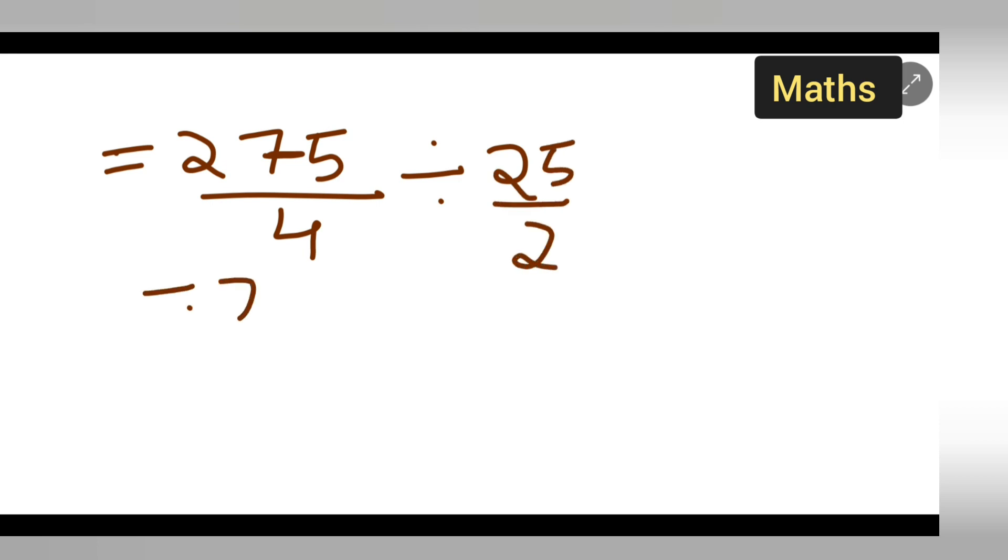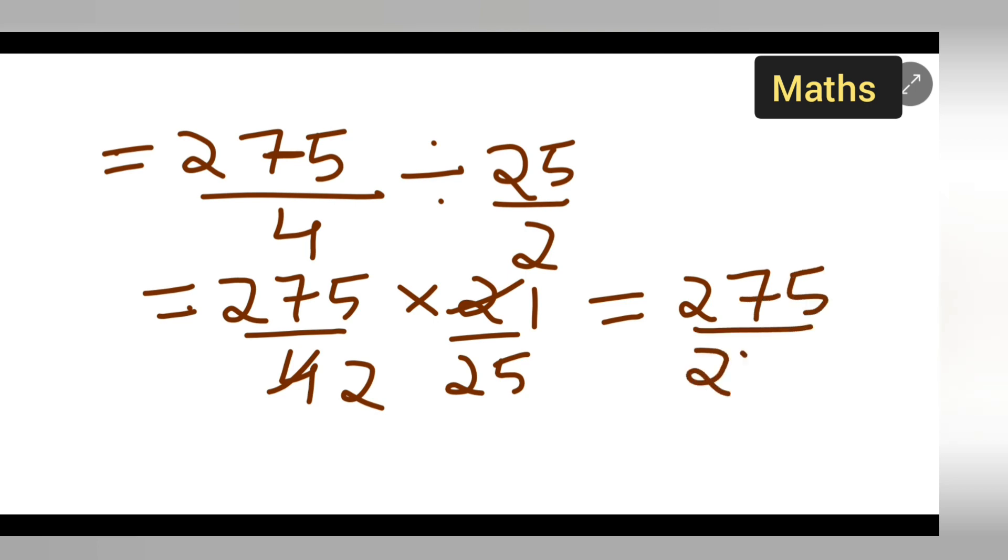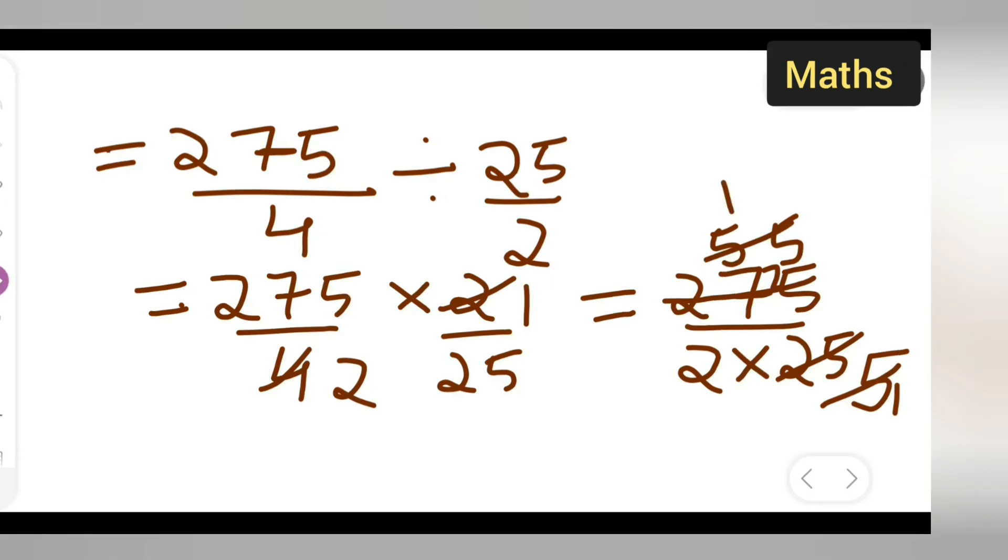This equals 275 over 4 multiplied by the reciprocal 2 over 25. Canceling: 275 over 2 times 1 over 25. We can cancel again: 5 goes into 275 fifty-five times, and 5 goes into 25 five times. So the answer is 11 over 2 meters.